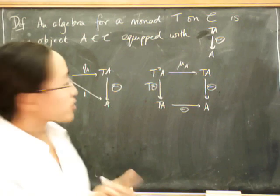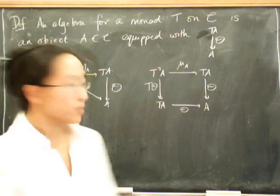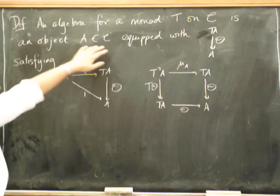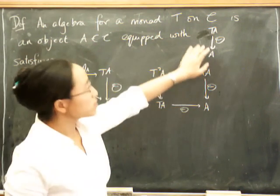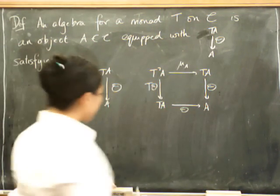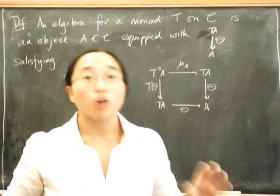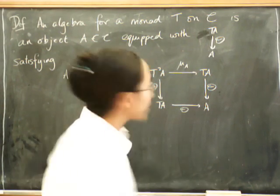And in order to say what that category is, of course, we have to say what the morphisms are. So here's the definition of an algebra. Remember, it's an object in the category equipped with an action satisfying these axioms. So a morphism of algebras, you might say, is the obvious thing. So let's see what the obvious thing is.